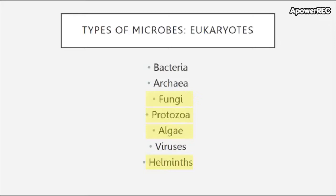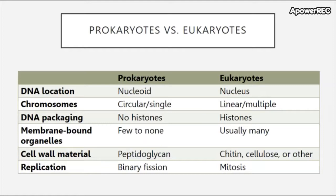We've spent quite a bit of time talking about bacteria, so let's move on to eukaryotic cells. Eukaryotic cells contain many types of organisms including fungi, protozoa, algae, helminths, and even animals. This is just a review of some of the differences. For eukaryotes, we'll focus on their nucleus, their linear multiple chromosomes, their histones used for packing, their different membrane-bound organelles — which really set them apart from prokaryotes — and mitosis. We're not going to cover mitosis in great detail; I'll have an image for your own review.